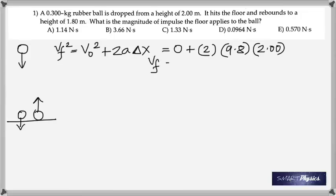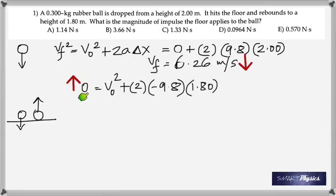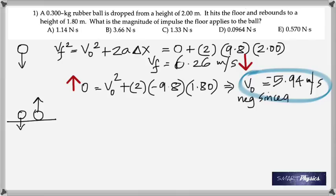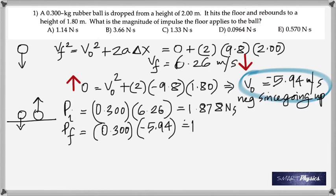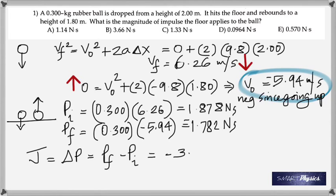What I'm trying to do first is find the velocity with which the ball just hits the floor. The arrow is pointing down - this is the velocity with which it reaches the floor. Then on the way back up, the final velocity is going to be zero when it reaches the top. We're looking for the initial velocity with which it begins its journey up. Using the same equation you get minus 5.94 meters per second, and it's negative because it's going up. That's the initial momentum, mass times velocity, and then you have the final momentum. Impulse, which is change in momentum, is the difference between the final and the initial.